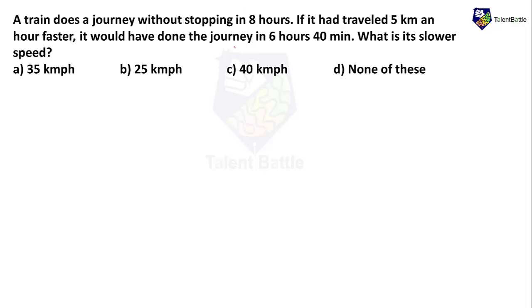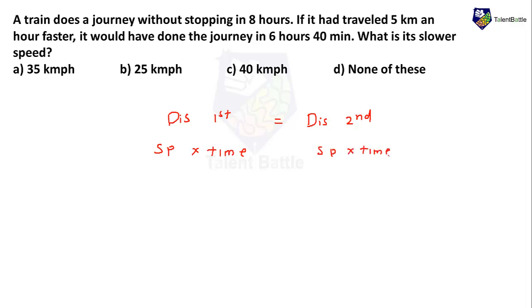The timings and speeds are different for both journeys, but the distance is the same. So: distance traveled during the first journey equals distance traveled during the second journey. Using the formula Distance = Speed × Time, the first journey has the slower speed — let's call it x. So distance of the first journey is x × 8 = 8x.